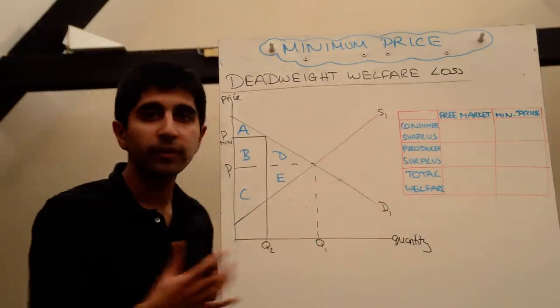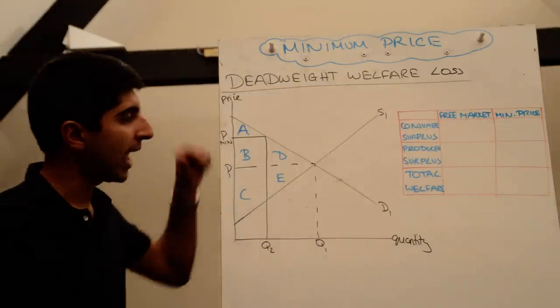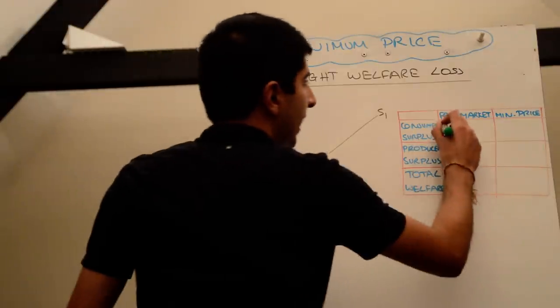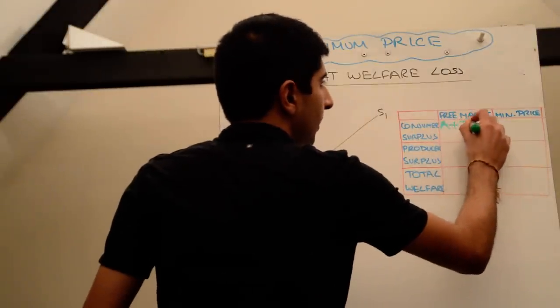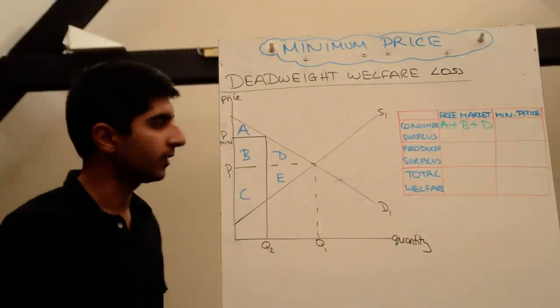So in the free market what was the initial level of consumer surplus? Well the area above the price below the demand curve was A plus B plus D so that was the initial amount of consumer surplus.